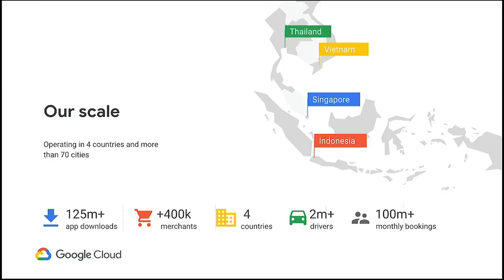Today we are in 15 different verticals with 19 different services built into one super app, with the singular goal of solving every workday need. Gojek has expanded into Southeast Asia. The app has been downloaded 125 million times in Indonesia alone. GoFood is one of the largest food delivery services in Southeast Asia with over 400,000 merchants on the platform. We're in four different countries, with a ride hailing service of more than two million drivers, and we process more than 100 million bookings every month.